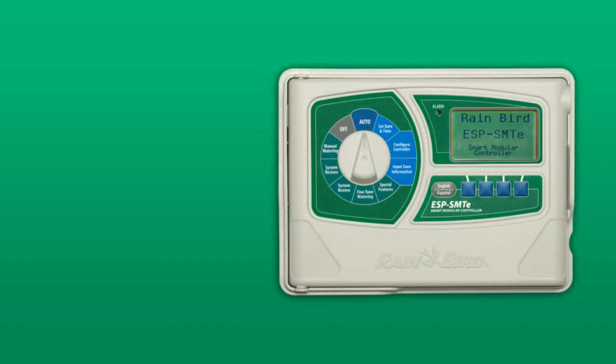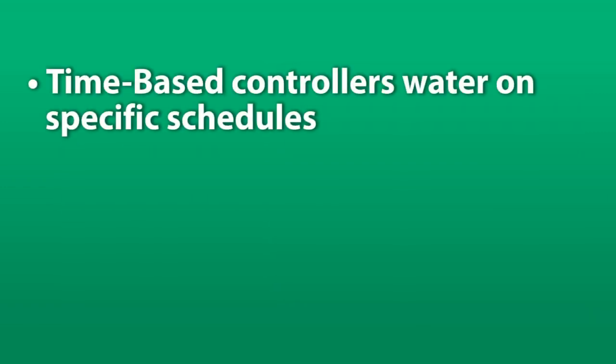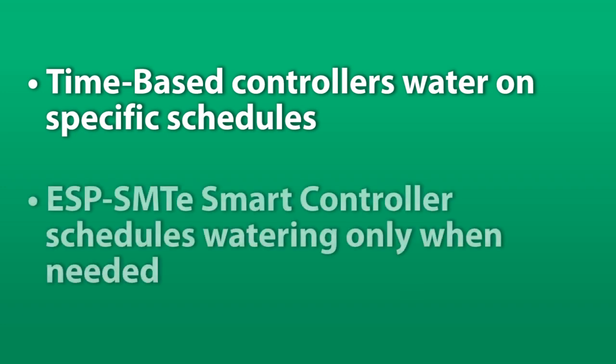In this short video, we'll show you how to set up the configured controller settings on the ESP-SMTE Smart Controller. Traditional time-based controllers water on specific schedules, with fixed watering days, start times, and run times. The ESP-SMTE Smart Controller uses input from the weather sensor to schedule watering only when your site needs it, and only on the allowed days and times that you specify.